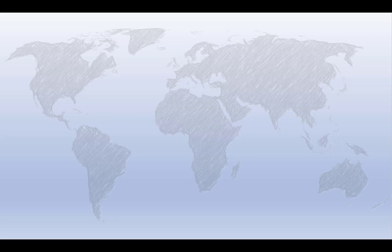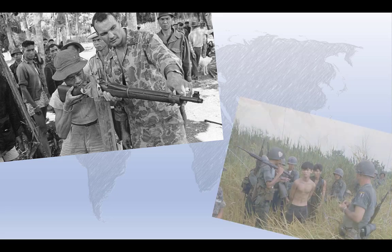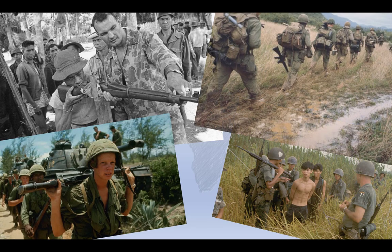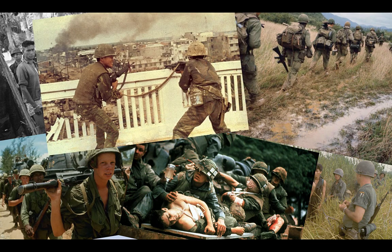The War Powers Act was in some ways a recognition of the failure of Congress to exercise adequate oversight during the Vietnam War. American involvement in Vietnam gradually escalated, starting with the deployment of military advisors in the mid-1950s, through the deployment of combat troops, and the Gulf of Tonkin incident in 1964, and the expansion of the war into neighboring Laos and Cambodia.